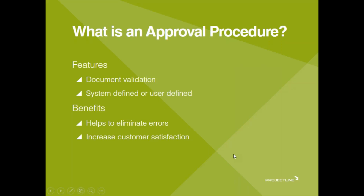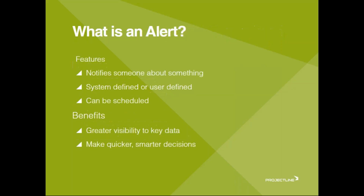Some of the main benefits are that it helps us eliminate errors and increase customer satisfaction. An approval procedure is basically a second pair of eyes — think of it as document validation. For example, if there's an illegal discount on a document, it can be sent to a manager for approval. That helps eliminate errors, decrease customer returns and credit notes, and ultimately increase customer satisfaction. An alert basically notifies someone about something — there are system-defined alerts and user-defined alerts.